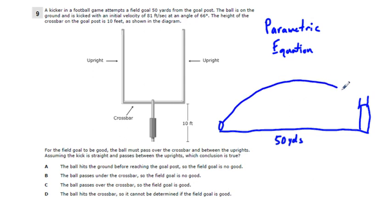The question is, for the field goal to be good, the ball must pass over the crossbar and between the uprights. Assuming the kick is straight and passes between the uprights, which conclusion is true?